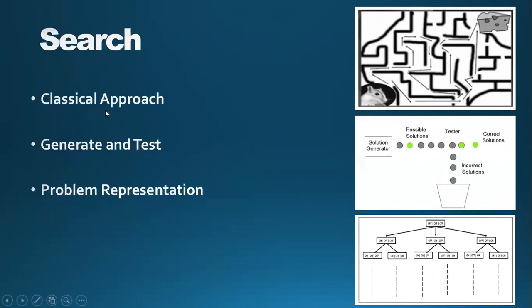There are three types of search: the classical approach, generate and test, and problem representation. The classical approach to solving a problem is pretty simple — given the problem at hand, use a hit-and-trial method to try various solutions. This approach usually works well for trivial problems. You don't know exactly how the problem will be solved, but you try to hit upon a solution.